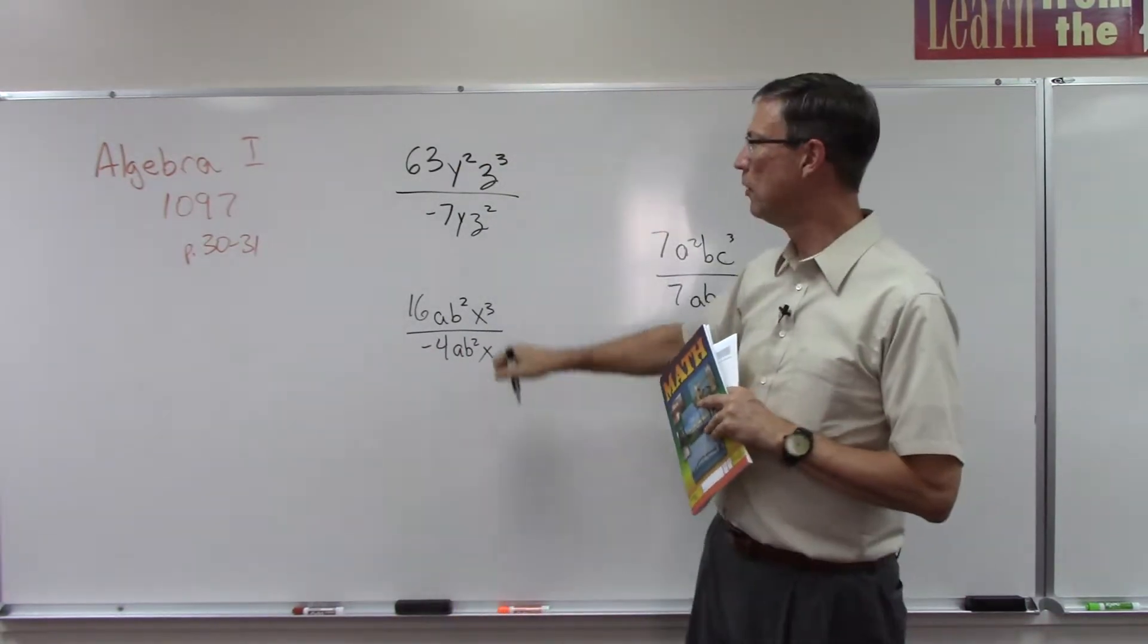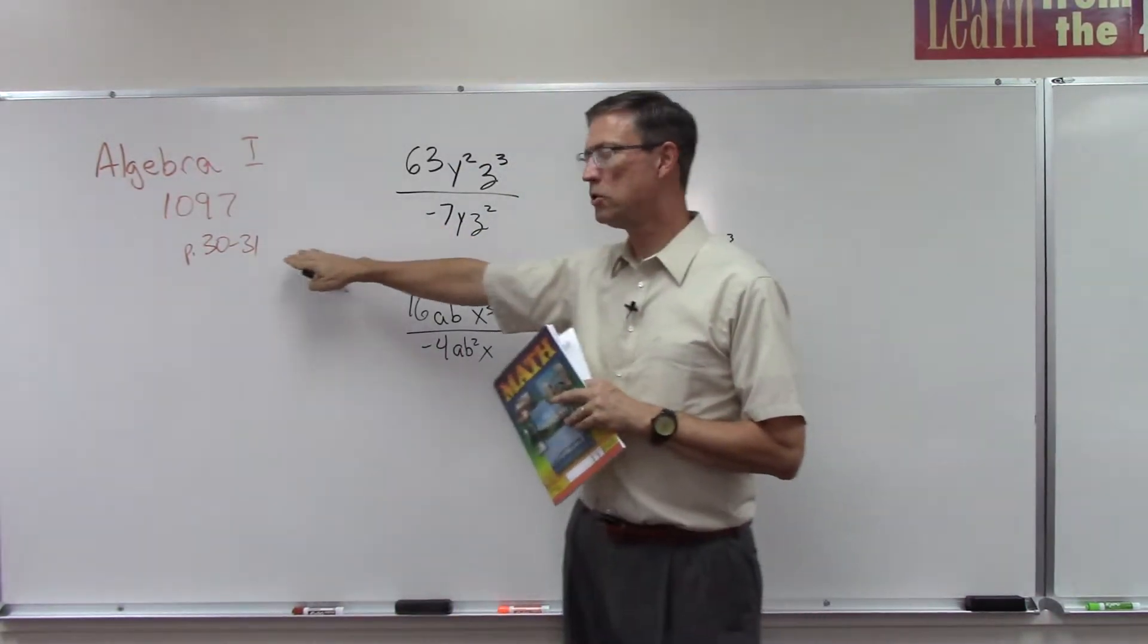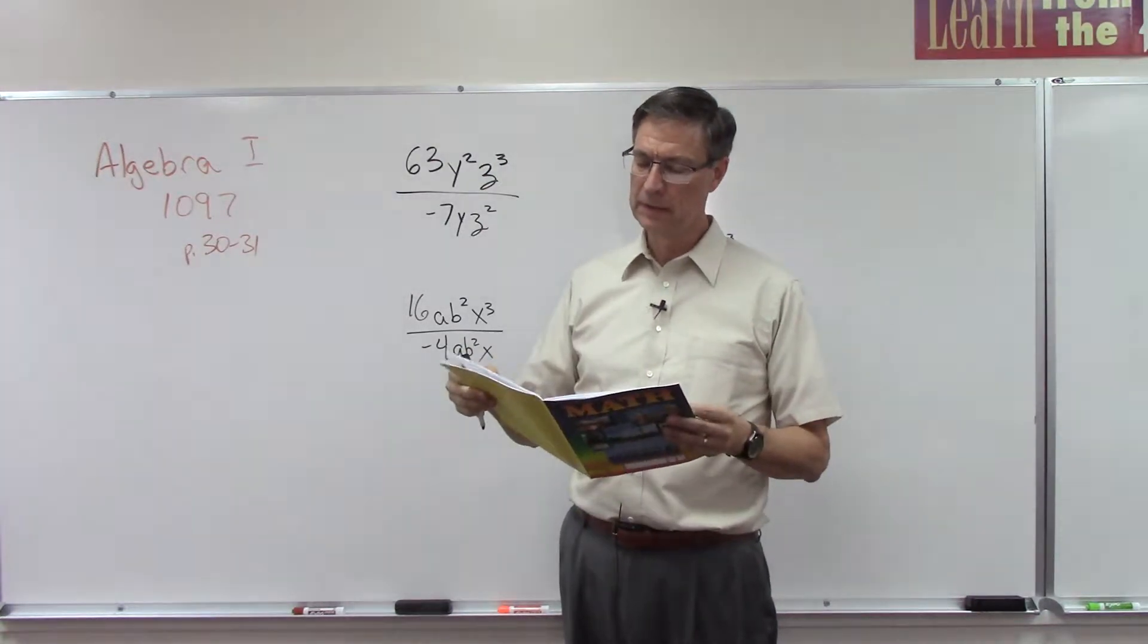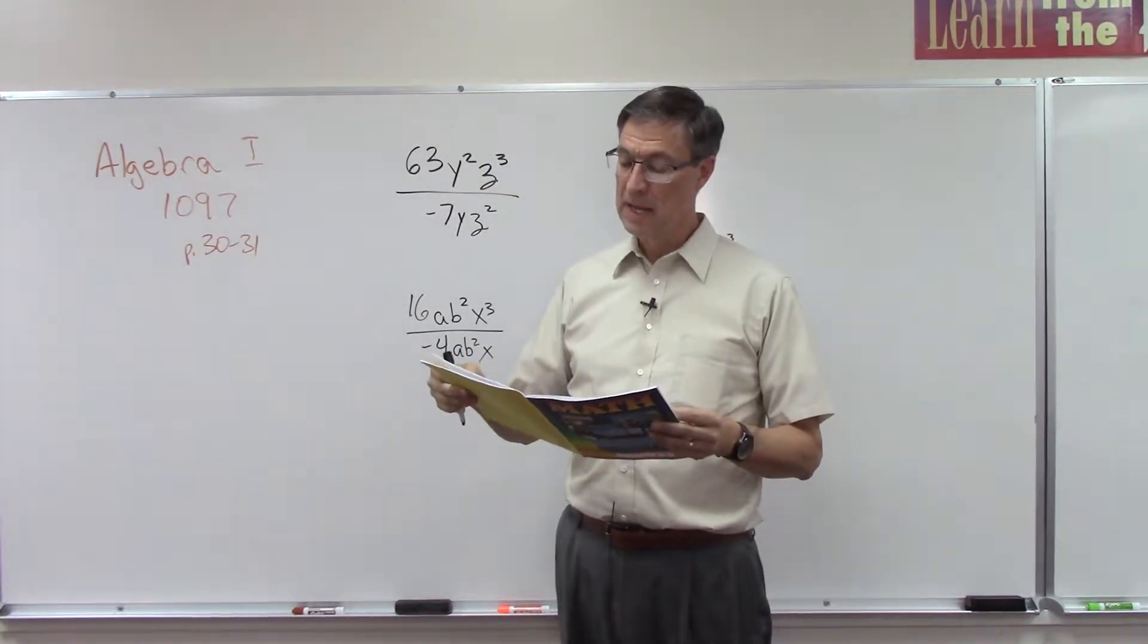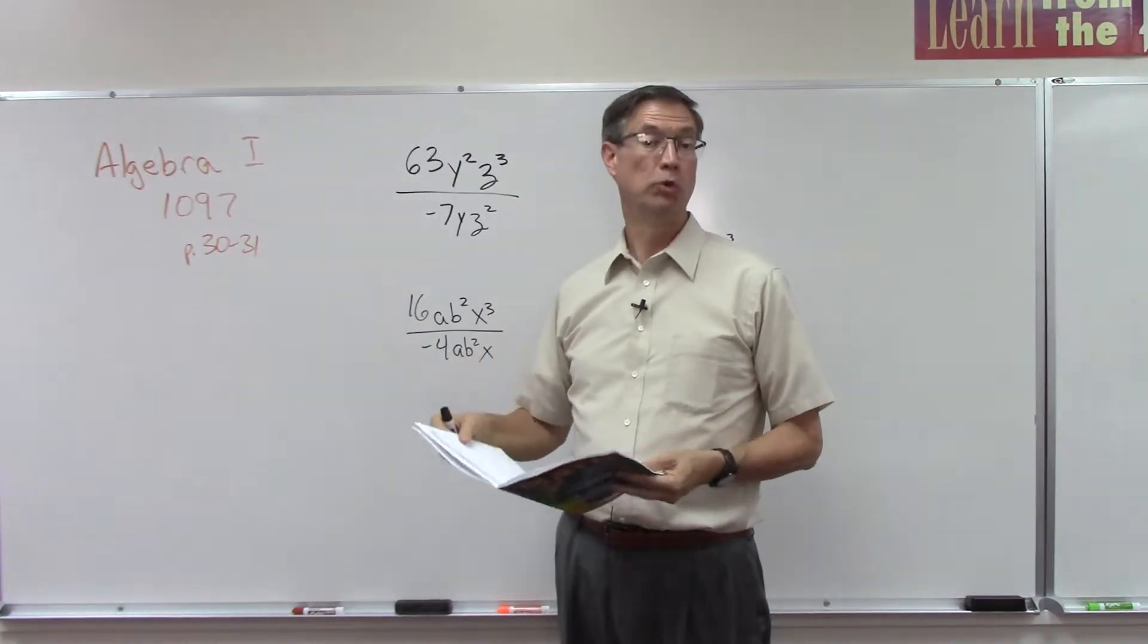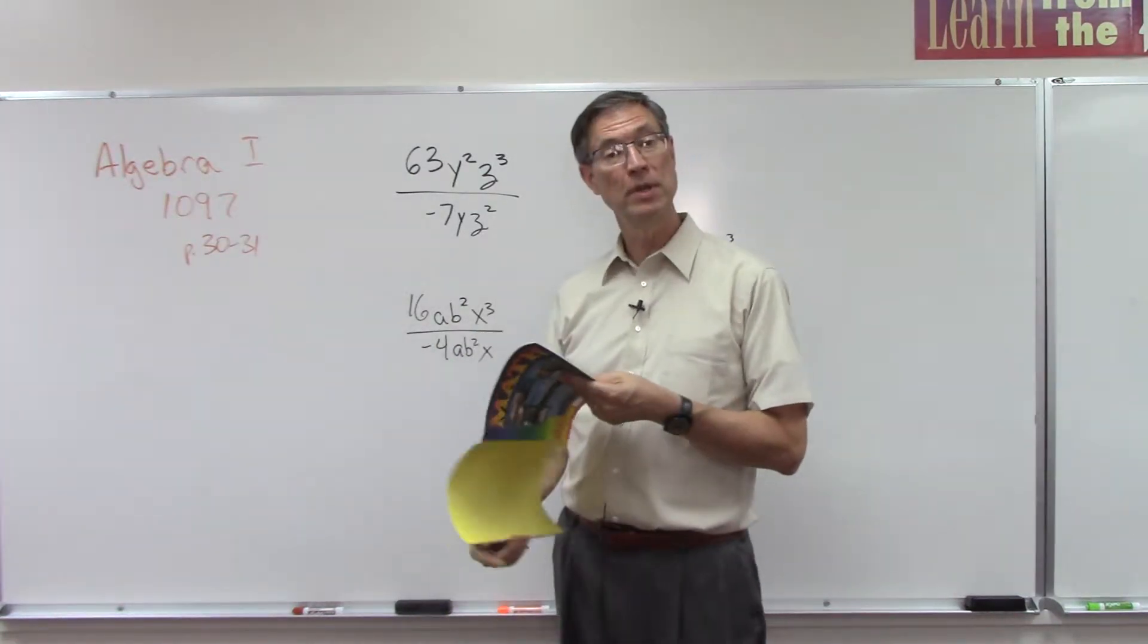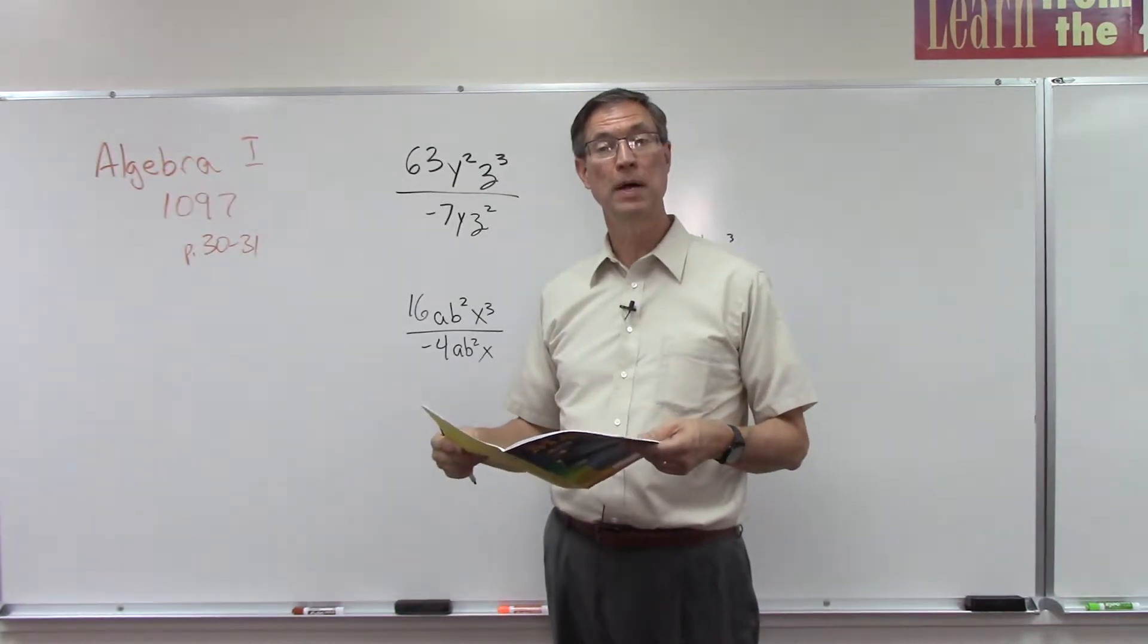Let's talk about division of monomials, page 30 and 31. The first step is to divide the coefficients, so you look at the two numbers out front and go ahead and divide them. Be careful about your rule for positive and negative numbers.